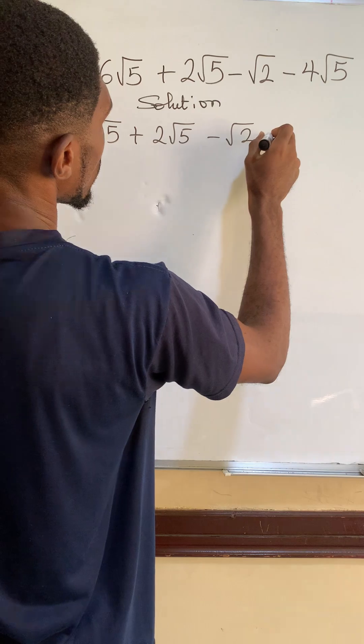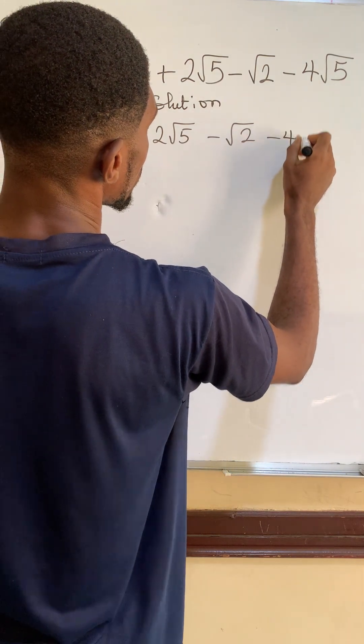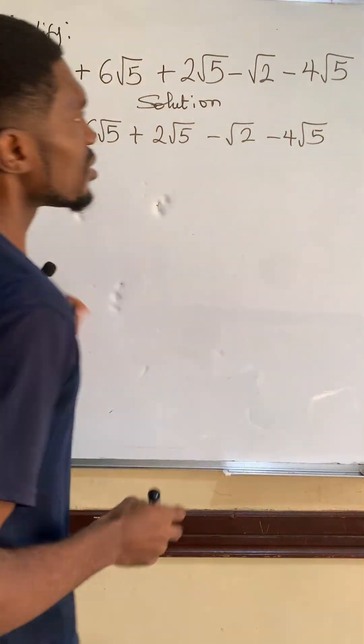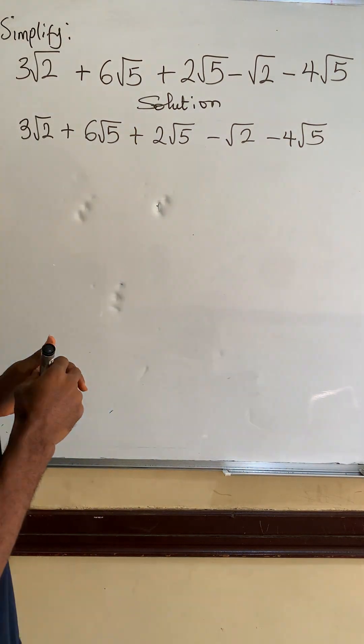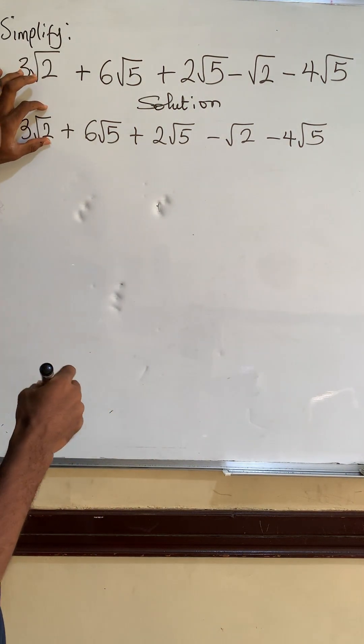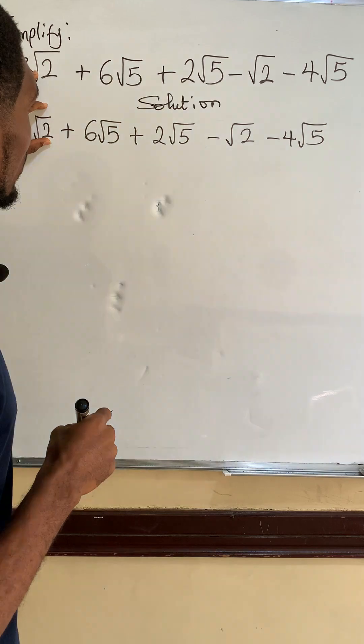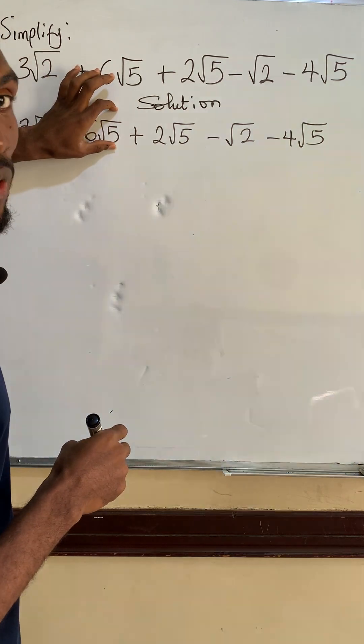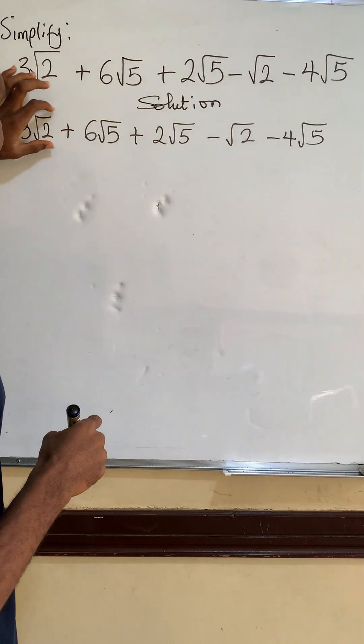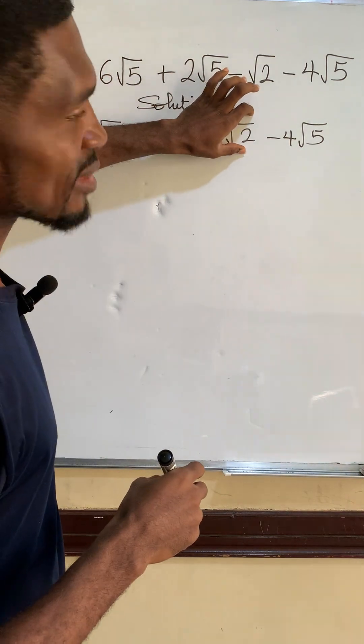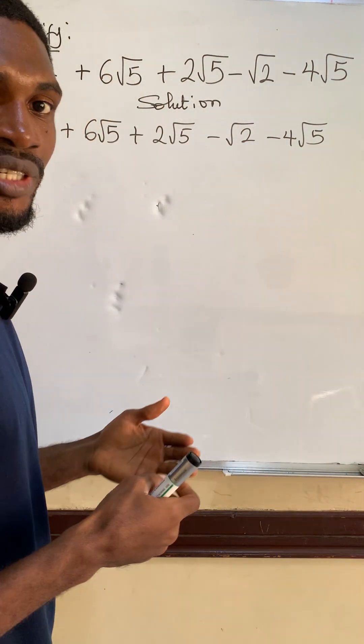We have to collect like terms. Now, the like terms is this root 2, you can just think of it like saying x, and root 5 you can just say it's like saying y. So this is just like saying 3x. I think you understand what I'm saying here.